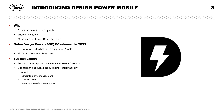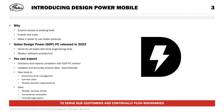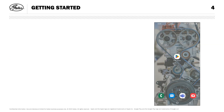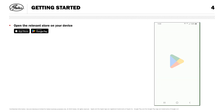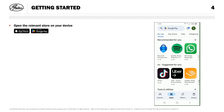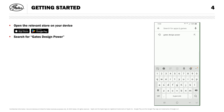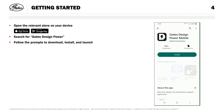GDP Mobile includes modules where you can store information critical to the function and maintenance of your Gates' belt drives, and you can have confidence that your data is reliably and securely stored, easy to access, and presented in a way that promotes organization. We've created Design Power Mobile to serve our customers and continually push boundaries. Open the App Store on your iPhone or Google Play on your Android device, search for Gates Design Power, and follow the prompts to download and install the free app.